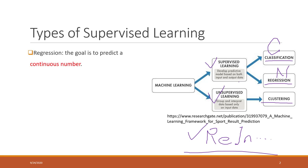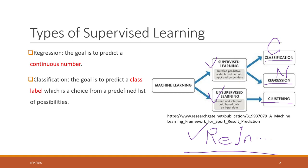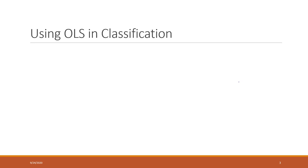Regression has the goal of predicting a continuous number, while classification is used to predict a label — class labels. So why can we not use a simple linear regression model for classification?